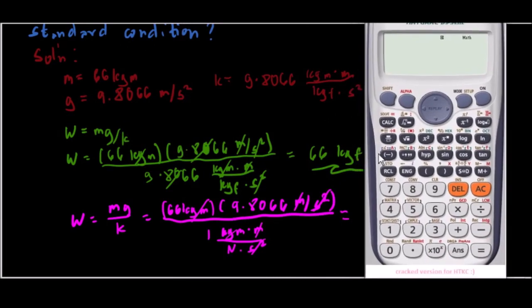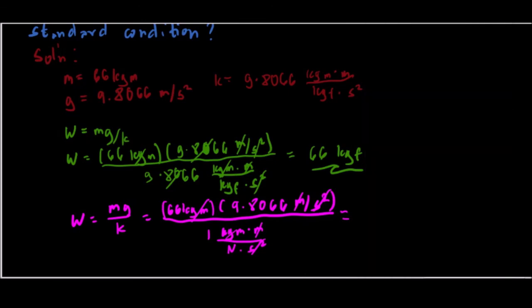Using the calculator: 66 times 9.8066 over 1 equals 647.24 Newtons. So our answer is 647.24 Newtons, and this is also a valid final answer.